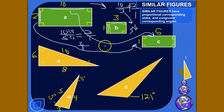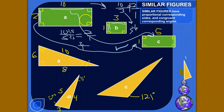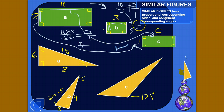Is 2 over 1 equal to 2 over 1? Definitely. And do they have congruent corresponding angles? Yes — 90 degrees, 90 degrees, 90 degrees, 90 degrees on each rectangle. So yes, rectangles A and C are definitely similar.